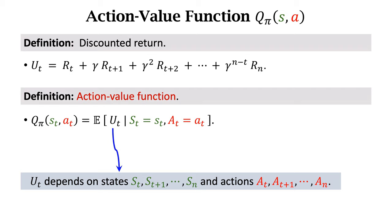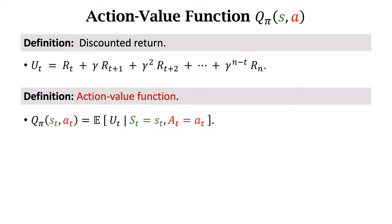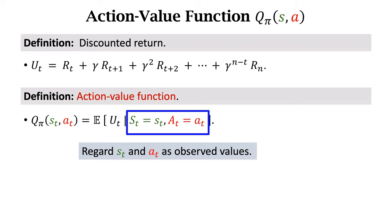At time t, the states from st to sn are unknown, and the actions from at to an are also unknown. Treat the current state st and the current action at as observed values. Pretend that st and at are not random.